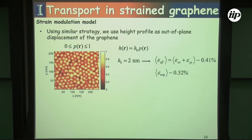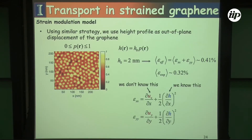So we moved to strain modeling, which is a little more complicated than impurity modeling. We took the same SEM pattern and mapped it to height. From the height, we could figure out the displacement in-plane and out-of-plane, and then reassemble the strain tensor — using displacement in the X and Y directions along with the vertical displacement to reconstruct exactly what the strain pattern should be. We know the height from STM patterns, but the in-plane displacements need to be backed out.